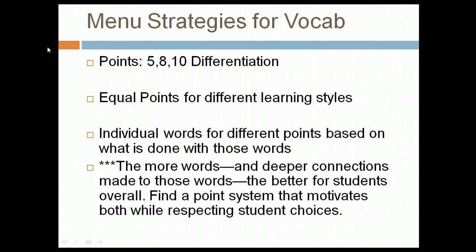You can also, when creating your learning menu, assign individual words different point values based on what's done with those words. For example, if you give 20 vocabulary words, there might be one-point things, three-point things, and five-point things you can do with those words, and you build up your points that way. The more words students learn and the deeper connections they make, the better overall — they get more vocabulary words and deeper comprehension.